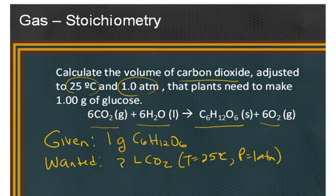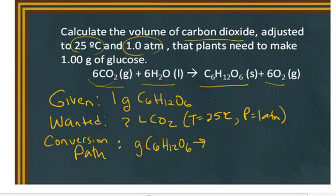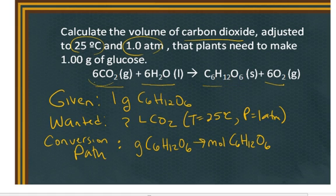So in order to work this problem out, we are going to have to convert from the given, which is the desired amount of product, to the wanted, which is how much of this reactant do we need to get that desired amount of product. So the conversion path is going to be from grams of glucose, C6H12O6, to moles of glucose. And the reason why we have to convert to moles of glucose is because our relationship is across this balanced chemical reaction. And we know that for every 1 mole of glucose that we make, it takes 6 moles of carbon dioxide. So then we'll have to convert from moles of glucose to moles of carbon dioxide.